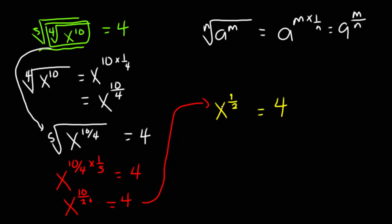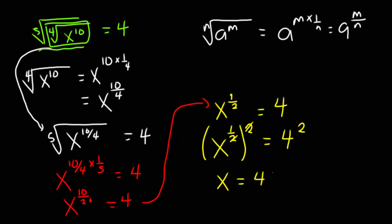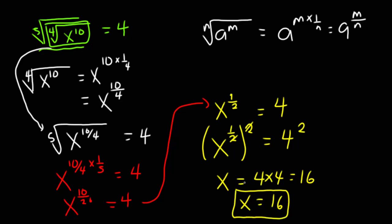So x exponent 10 on 20 is the same as x exponent 1 on 2, because 10 on 20 is 1 on 2, and this is equal to 4. To find the value of x, I raise x exponent 1 on 2 to the power of 2, which cancels the 2, and I do the same thing to get 4 exponent 2. This gives x equal to 4 times 4, which is 16. Therefore x is equal to 16. Thank you for watching this video, please don't forget to comment, like, and subscribe.